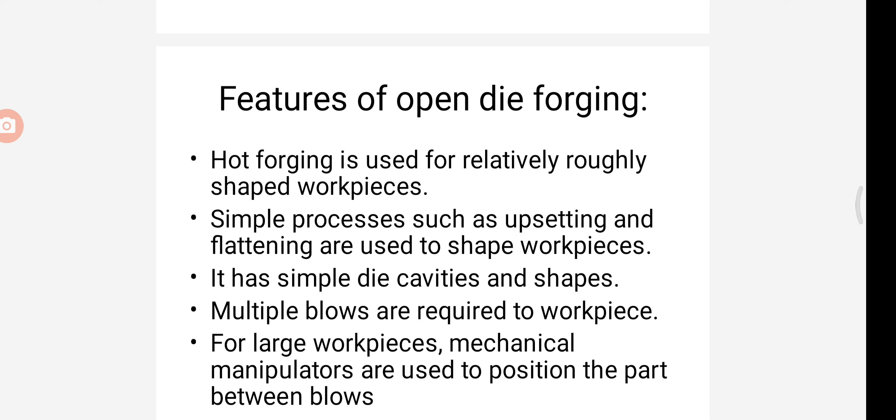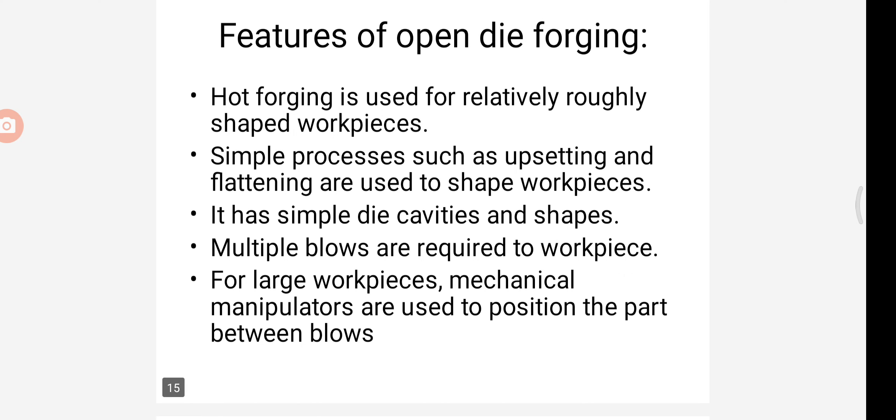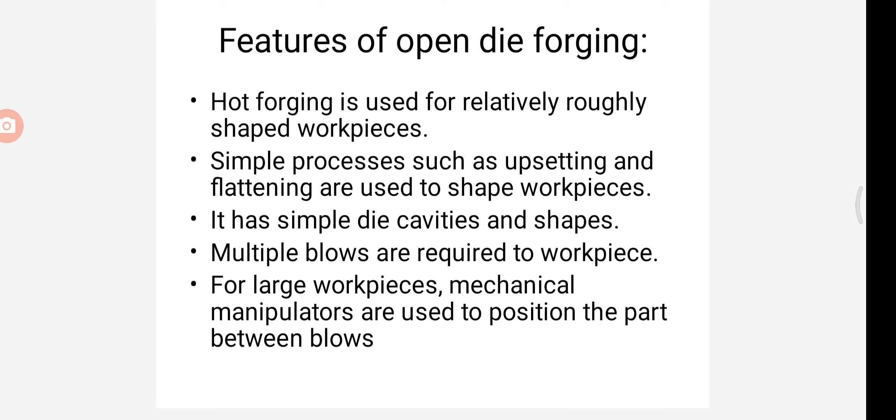Next, we are seeing what are the features of the open die forging. Hot forging is used for relatively roughly shaped workpieces. Simple processes such as upsetting and flattening are used to shape works. It has simple die cavities and shapes. Multiple blows are required to workpiece. For large workpieces, mechanical manipulators are used to position the part between blows. This is the open die.